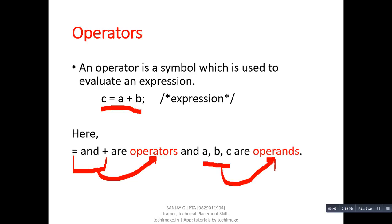Operands can be a constant value or they can be a variable. So, if we say what is an expression — an expression is a combination of more than one operator and more than one operand.